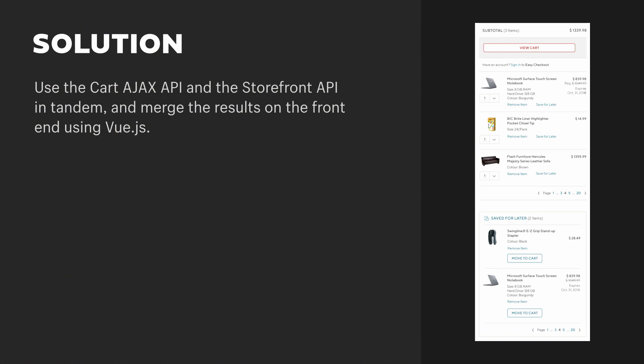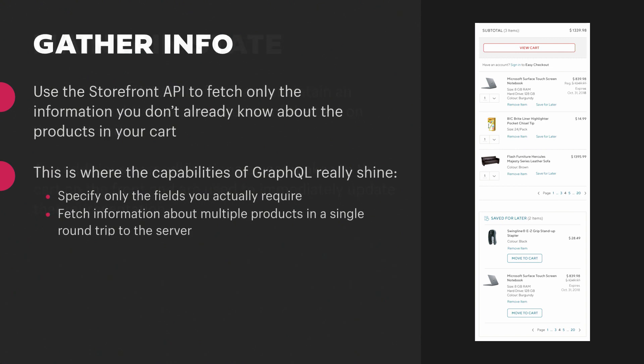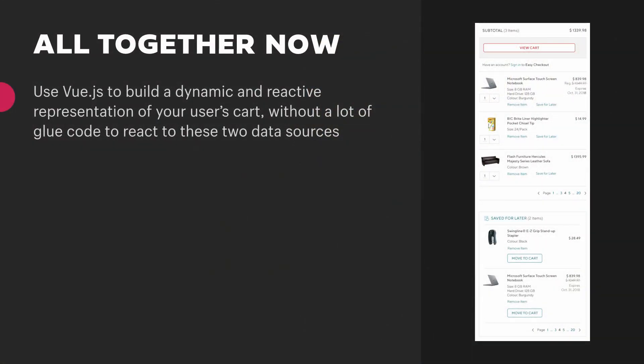We'll break this down into three steps. First, use the cart Ajax API to maintain an accurate and real-time representation of the user's cart on the front-end — any time they make an action involving the cart. Second, use the Storefront API to fetch only the information you don't already know about the items in your cart. This is where GraphQL really shines — you can request only the fields you don't already know about your products, and grab information about multiple products in one single round trip. And lastly, use Vue.js to build and maintain the reactive representation of those items and combine the results on the front-end.